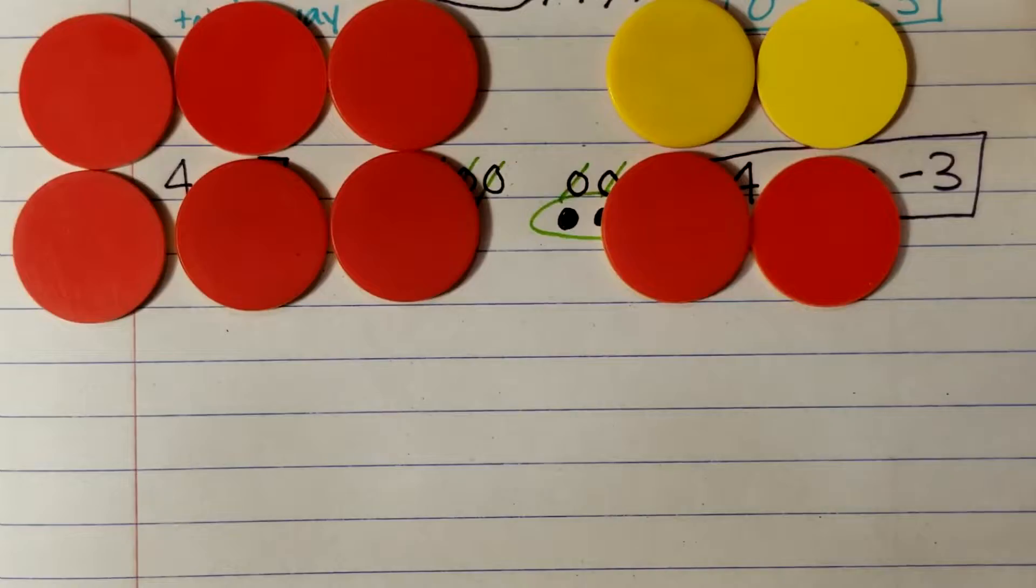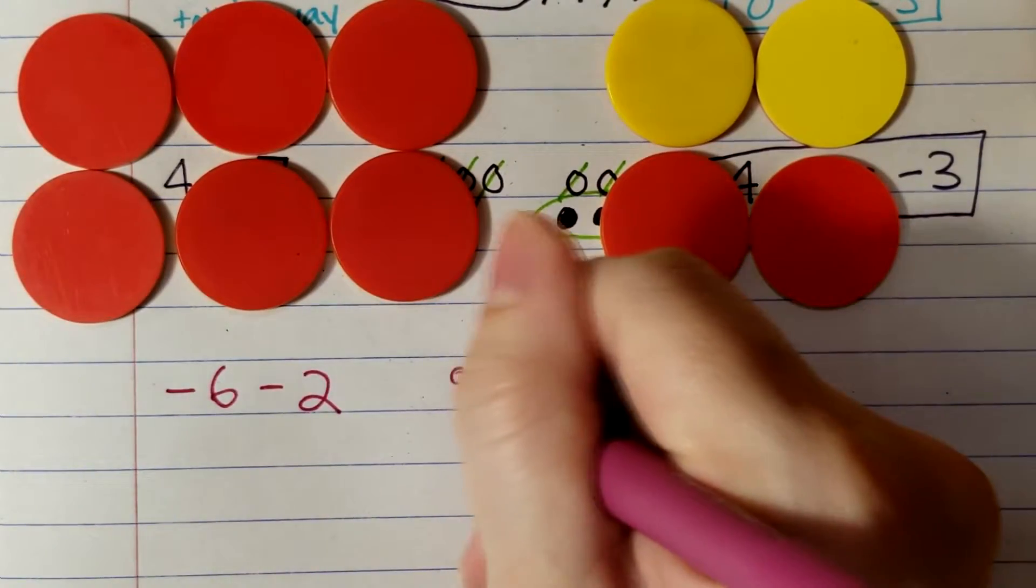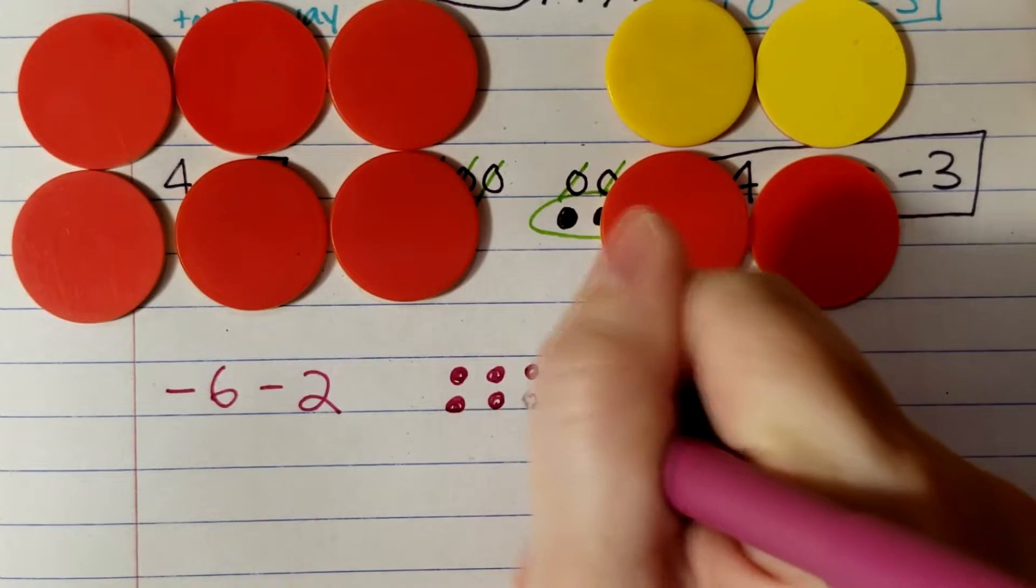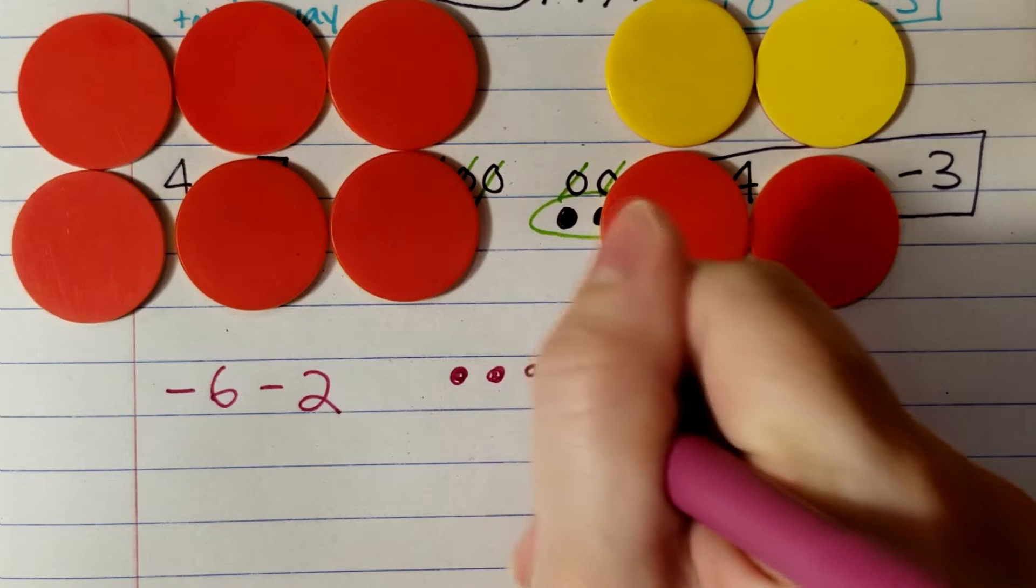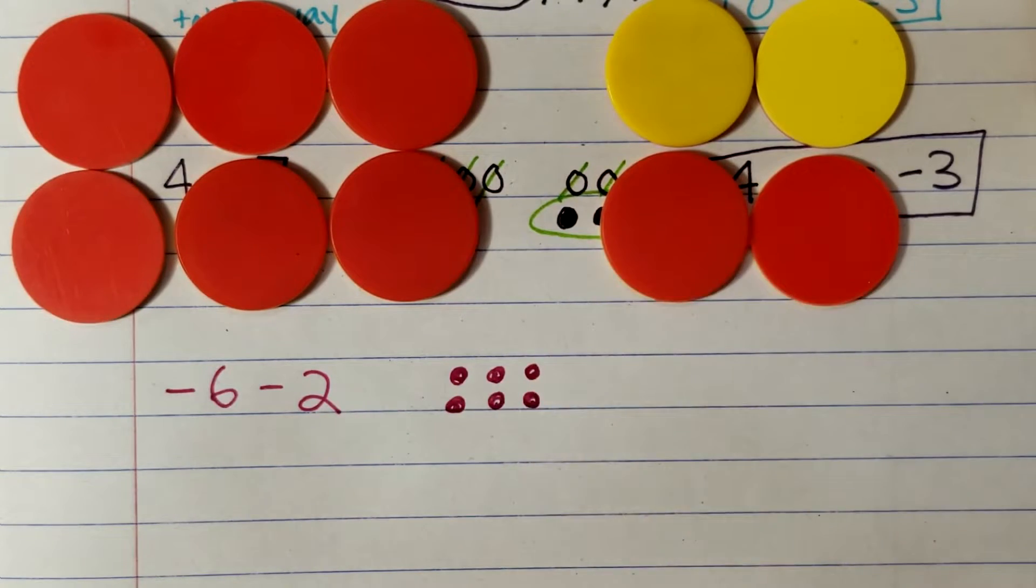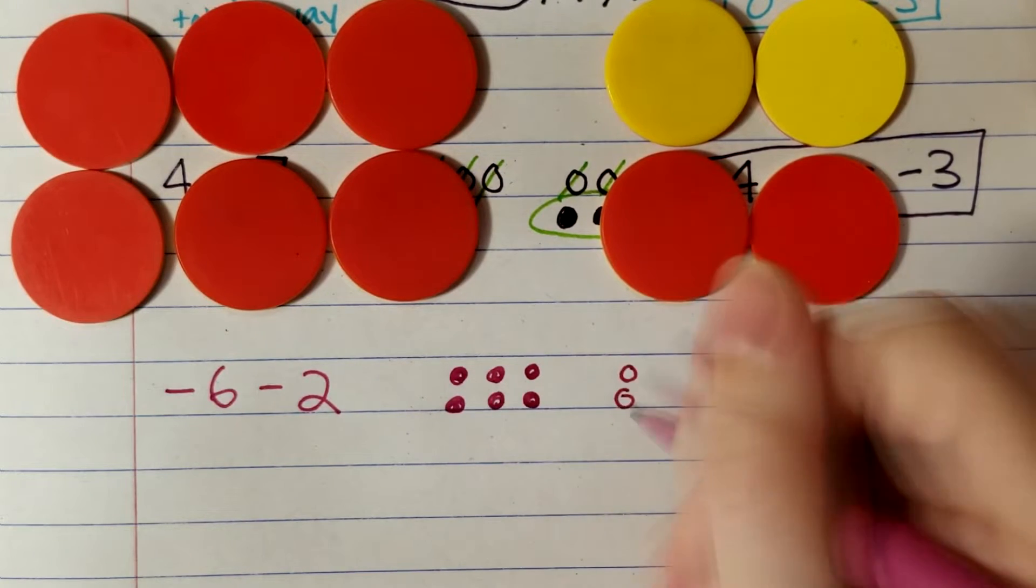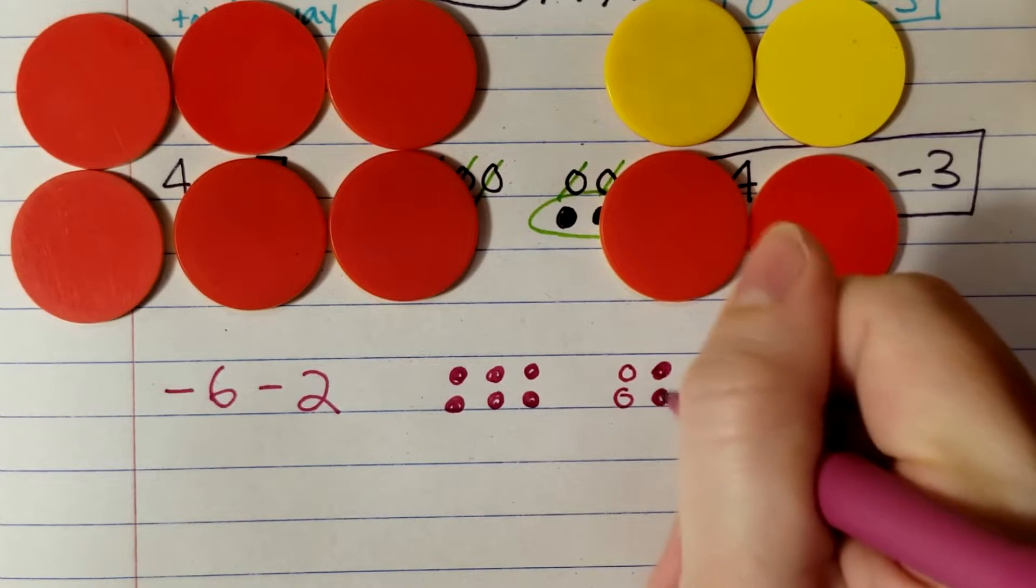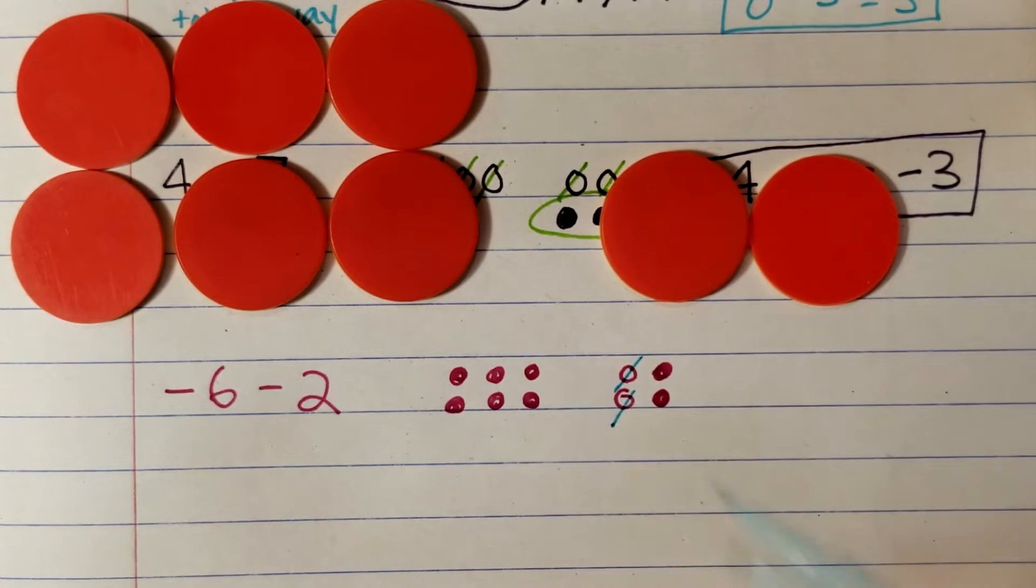And we're moving on. Negative six minus two. I start with six negatives and it says to take away two. Time to pause and think. If I owe somebody six dollars and then somebody else steals two dollars from me, would I end up with more money or with less money? You would end up with less money. Here I have six negatives and the question is asking me to take away two that I don't have. So just like before, we need zero pairs. Now I can take away two and I am left with eight negatives.